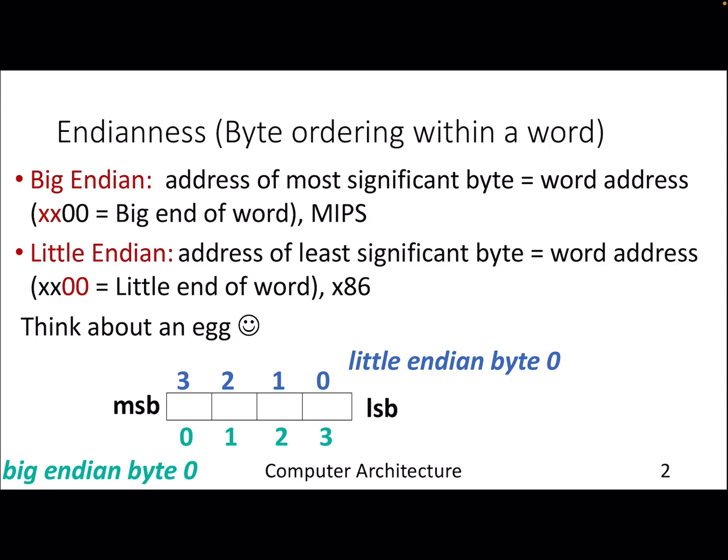Whenever you are dealing with constants or storing something in a register, we need to understand where exactly the data is stored in terms of the byte ordering. There are two ways in which we can actually access the address of a particular byte, and based on that it will follow a byte order.